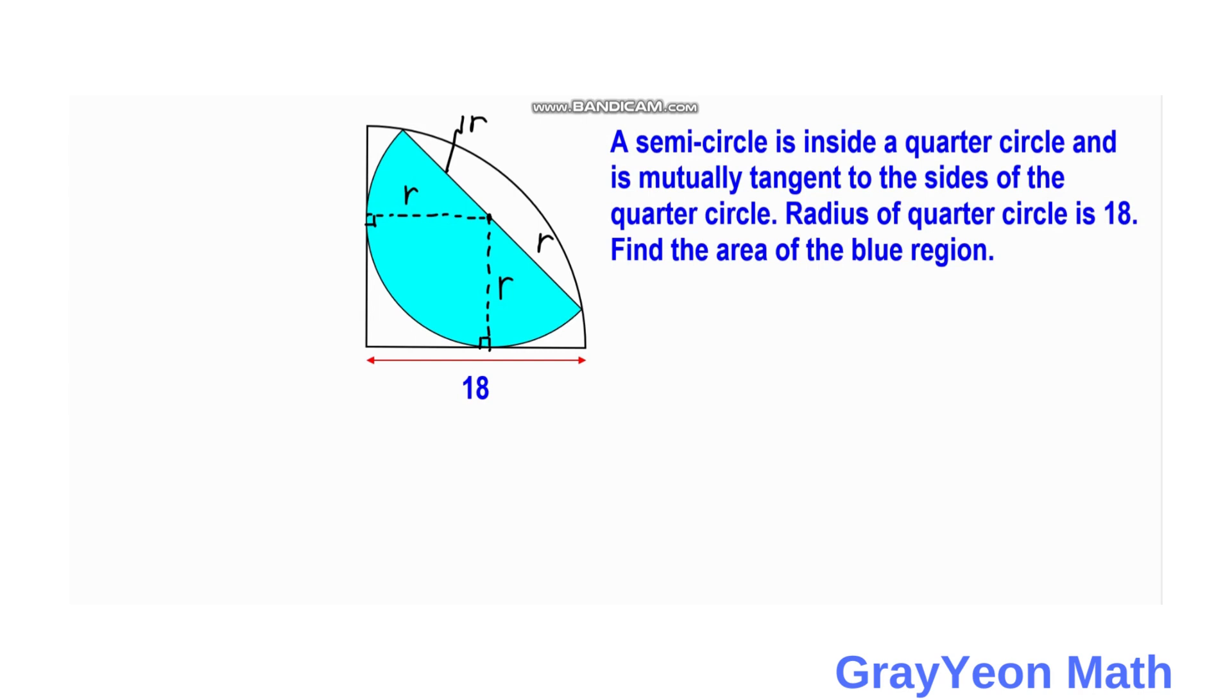So next is we draw a line from the center of this semicircle to the center of the quarter circle. And we notice that this triangle is actually an isosceles right triangle since if this is the horizontal line, then this is also R. So the hypotenuse would be R square root of 2.